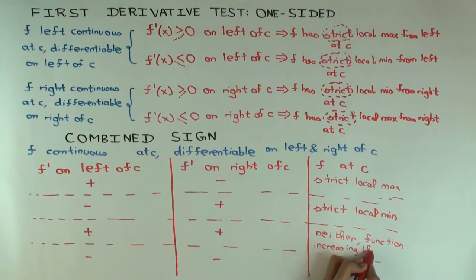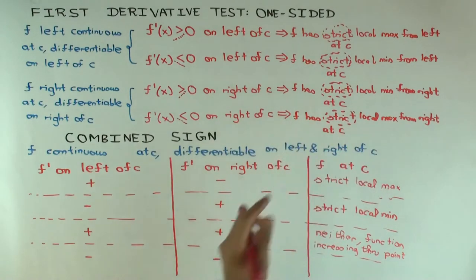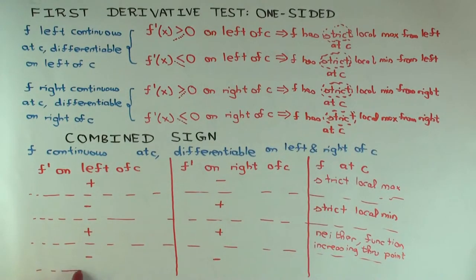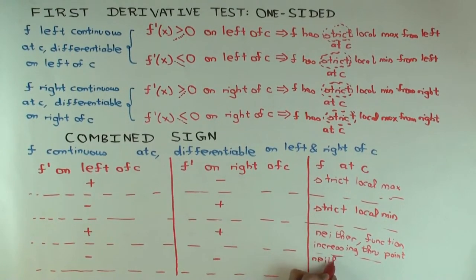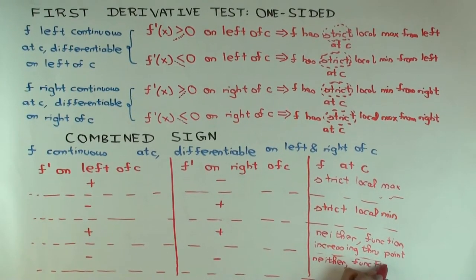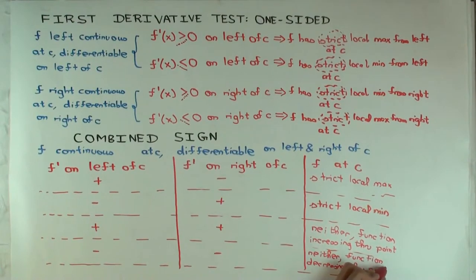After I finish writing this down, I'll make pictures to illustrate. Okay. Minus minus. Local min from the left. Local max from the right. So it's sort of neither. It's decreasing through the point.